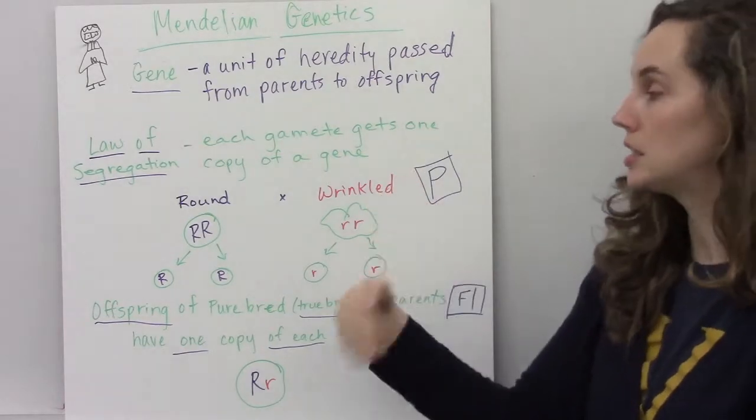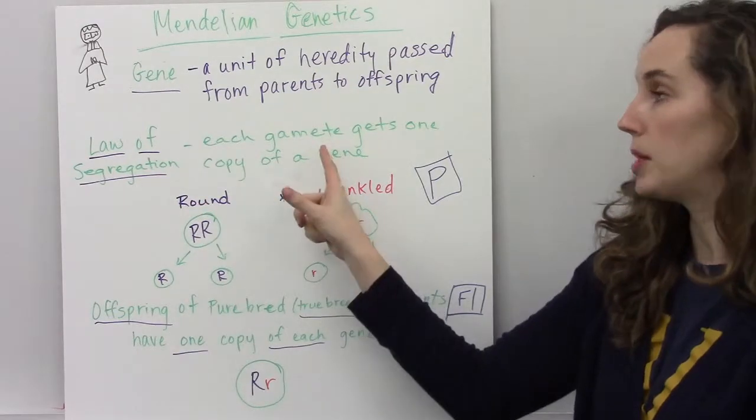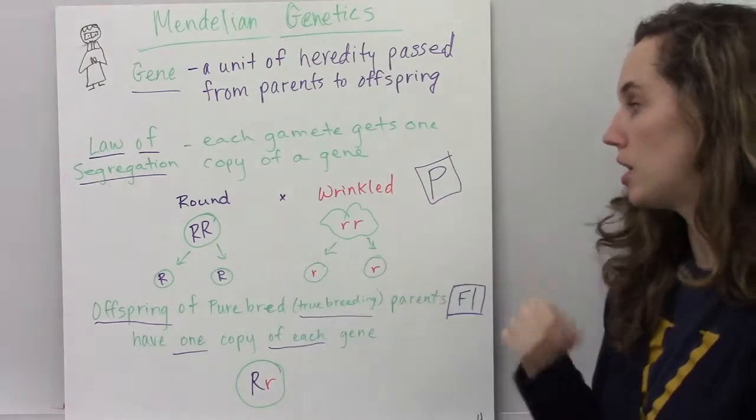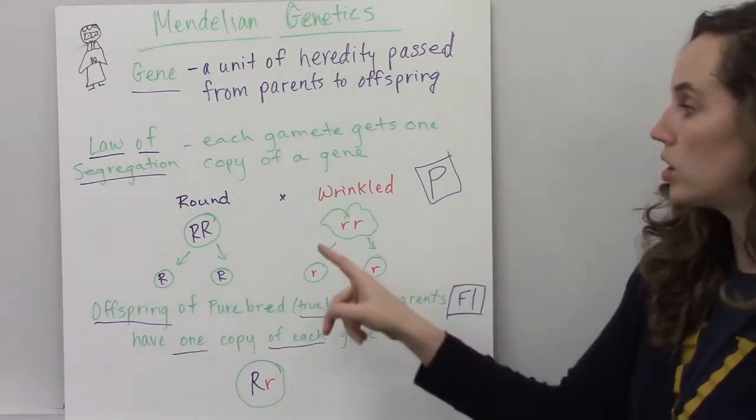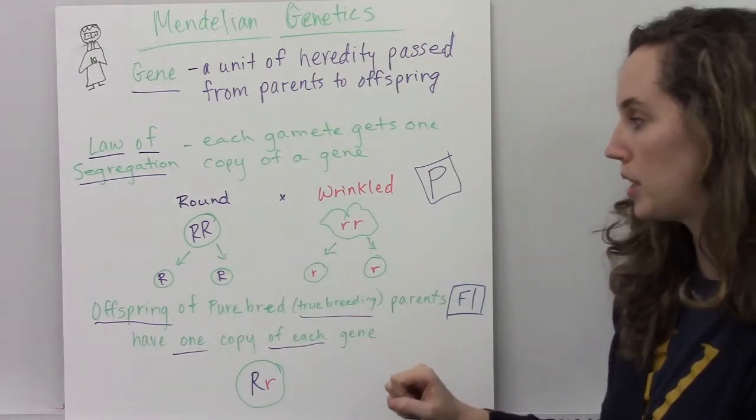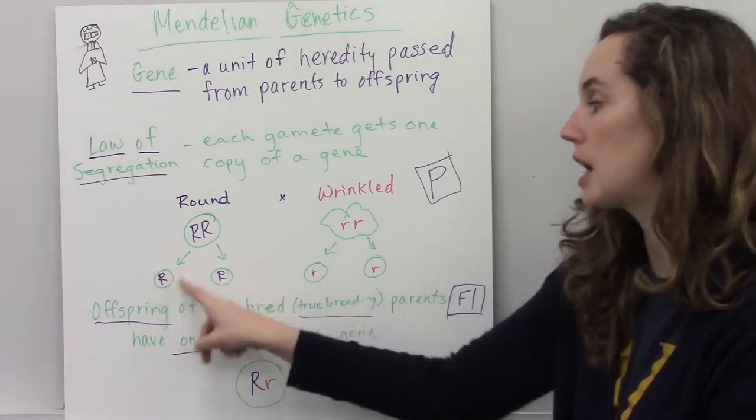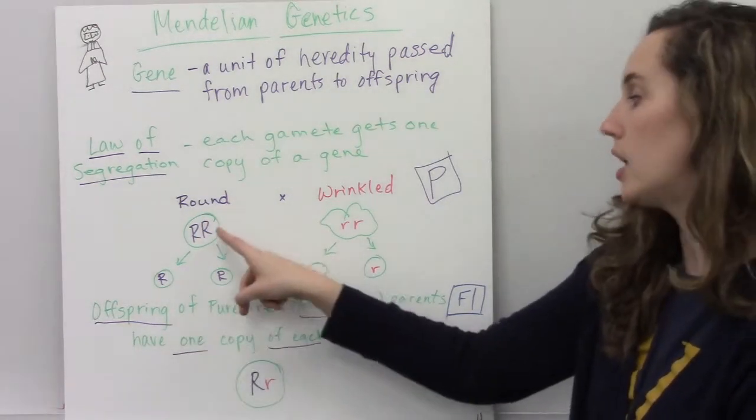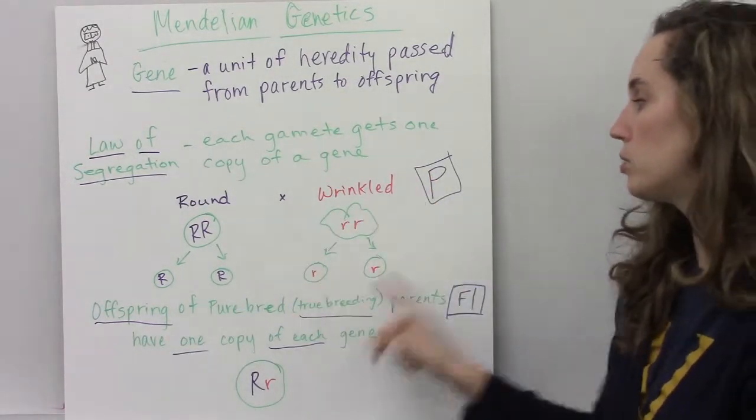He also developed the law of segregation, which just means that each gamete, or sex cell, or a sperm or an egg, gets one copy of a gene. Here's my purebred pea generation example. If you have a homozygous purebred dominant round pea, half of the gametes from this organism will have one of the copies of that chromosome, and the other set of gametes will have the other copy.